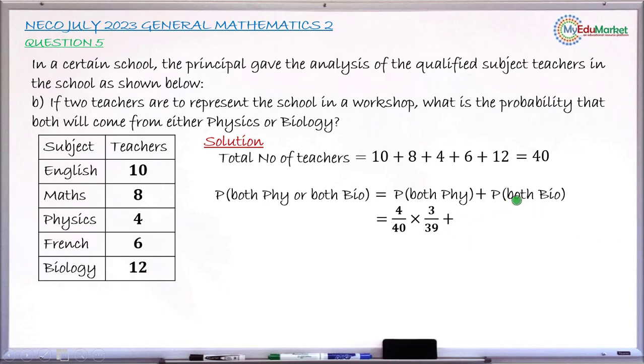Then, plus, if you count here, selecting first teacher and it happens is a Biology teacher is going to be 12 over 40 multiplied by second selection. Biology teacher will be 11 over 39. After selecting one Biology teacher, there will be 11 Biology teachers and there will be remaining 39 total number of teachers.